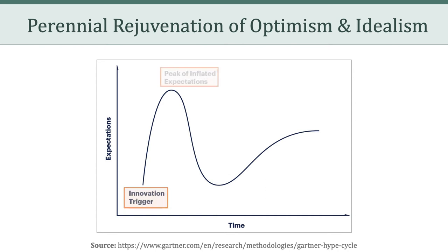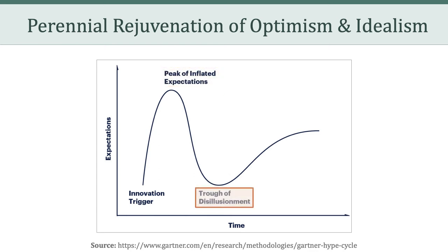The second phase is the peak of inflated expectations. Early publicity produces a number of success stories. Some companies take action to capitalize on the new technology, and others may not. After that comes the third phase: the trough of disillusionment. Expectations have reached a bottom. Interest wanes as experiments and implementations fail to deliver on their promises. Producers of the technology shake out or fail. Investments continue only if surviving providers improve their products to the satisfaction of early adopters.